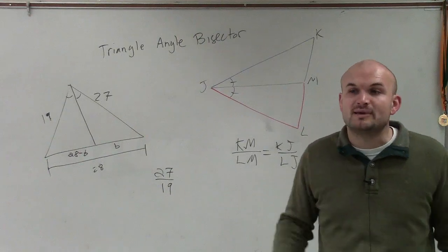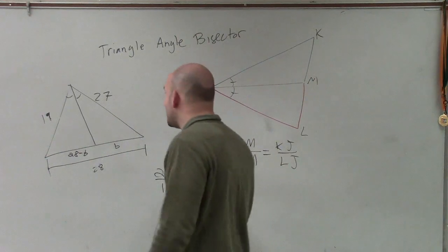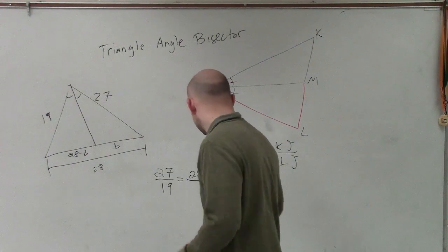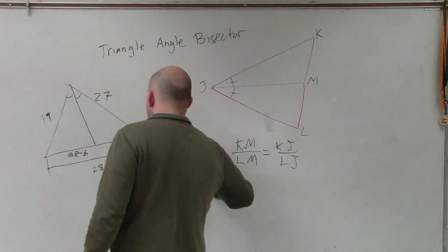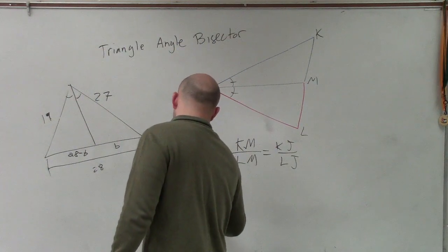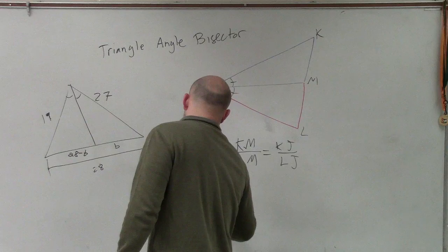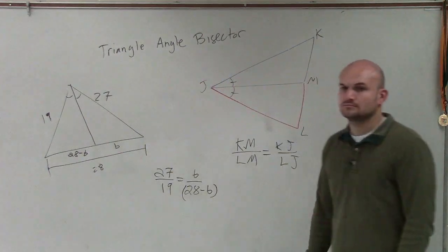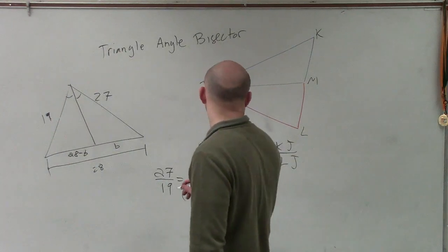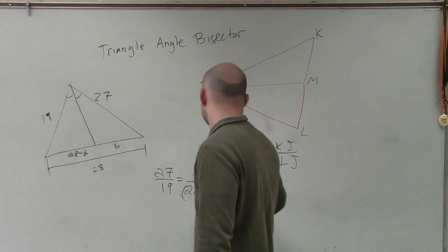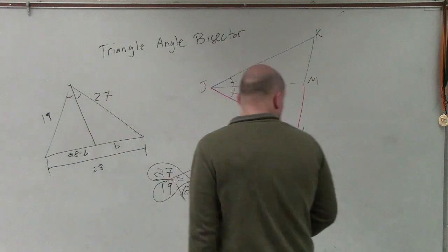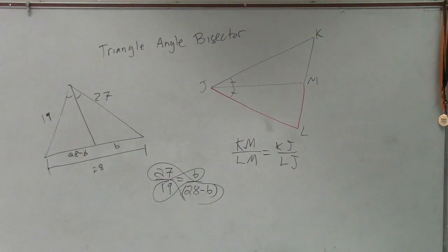Now, again, we still don't know what B is. However, now we have a ratio that we can set. Oh, I'm sorry, not 28. But now, what we do is we have a ratio that we can set. Now I'll apply my cross multiplication, and I will use my calculator on this one.